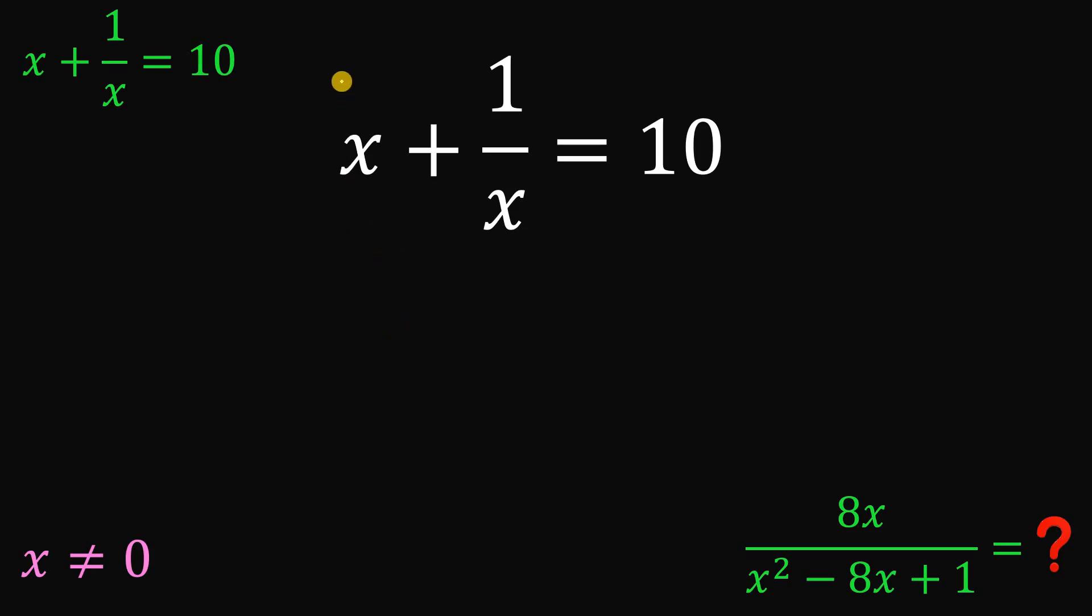Now since x is not equal to 0, why not multiply both sides of this equation by x? So we have x squared plus 1 equals 10x.